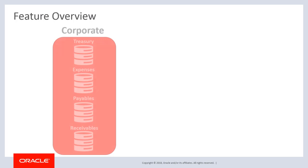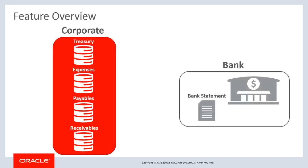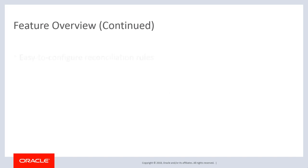Bank reconciliation for PeopleSoft Treasury involves comparing and matching your recorded business transactions with your bank's corresponding transactions. The bank reconciliation feature helps maximize match rates and minimize manual user intervention, as well as reduce customizations. While PeopleSoft provides different methods to reconcile balances, this video focuses on automatic bank reconciliation, which you can use if you receive bank statement files electronically.